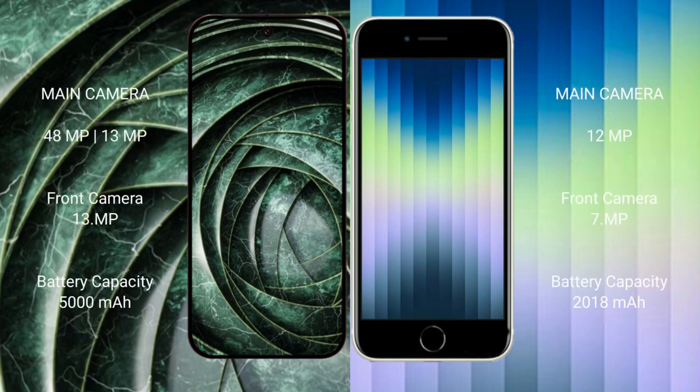The Google Pixel 9a features a dual rear camera setup with a 48MP main camera and a 13MP ultrawide, plus a 13MP front camera. The iPhone AC has a single rear camera setup with a 12MP main camera and a 7MP front camera. The Pixel 9a has a 5000mAh battery with 18W fast charging support, while the iPhone AC has a 2018mAh battery with 20W fast charging support.